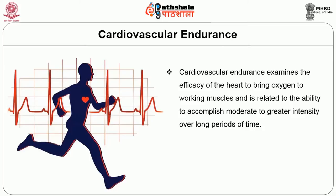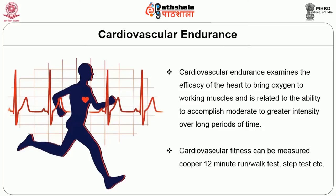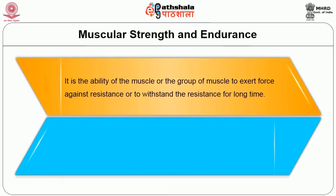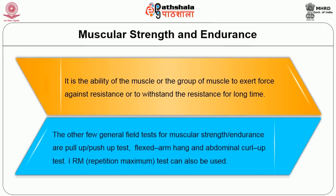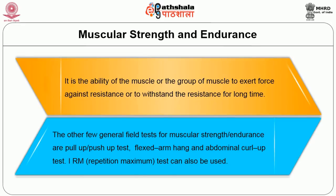Cardiovascular endurance examines the efficacy of the heart to bring oxygen to the working muscles, directly related to the ability to perform moderate to high-intensity activity over a long period. Cardiovascular fitness can be measured by the Cooper fitness test and step tests. Muscular strength and endurance is the ability of a muscle or group of muscles to exert force against resistance or withstand resistance for a long time. Field tests for muscular strength and endurance include pull-up, push-up, flexed-arm hang tests, abdominal curl test, and the 1RM test.